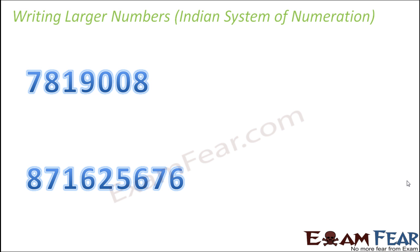So to make things simpler, what is done is we make use of commas. Now there are specific places where we put commas, and then looking at the commas, we can easily identify which digits represent thousands, which digits represent lakhs, which digits represent crores and so on. And that makes reading larger numbers very easy.